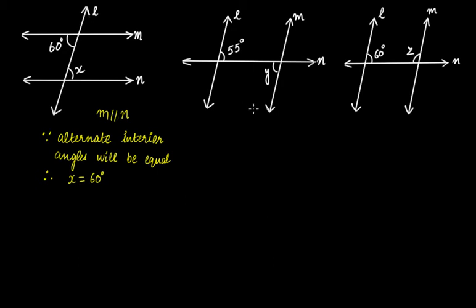In this case, L and M are parallel lines and line N is the transversal. If you look at these two parallel lines with N as a transversal, this angle and this angle are alternate interior angles. Therefore, even in this case, Y will be equal to 55 degrees on the basis that alternate interior angles are equal.